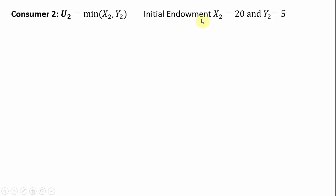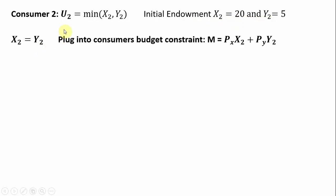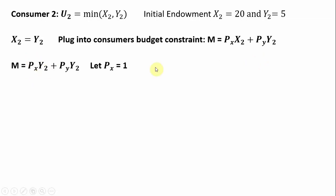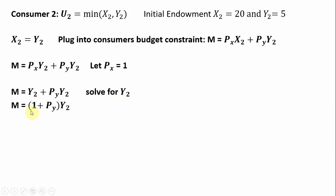Moving on to consumer 2, whose initial endowment is 20 and 5. For perfect complements, we take what's in parentheses and set them equal — the consumer will consume equal quantities of good x and good y to maximize utility. We plug this result into the consumer's budget constraint: income equals the price of good x times x plus the price of good y times y. Substituting x2 = y2, and normalizing the price of good x to 1, we factor out y on the right-hand side and divide through by (1 plus the price of y).